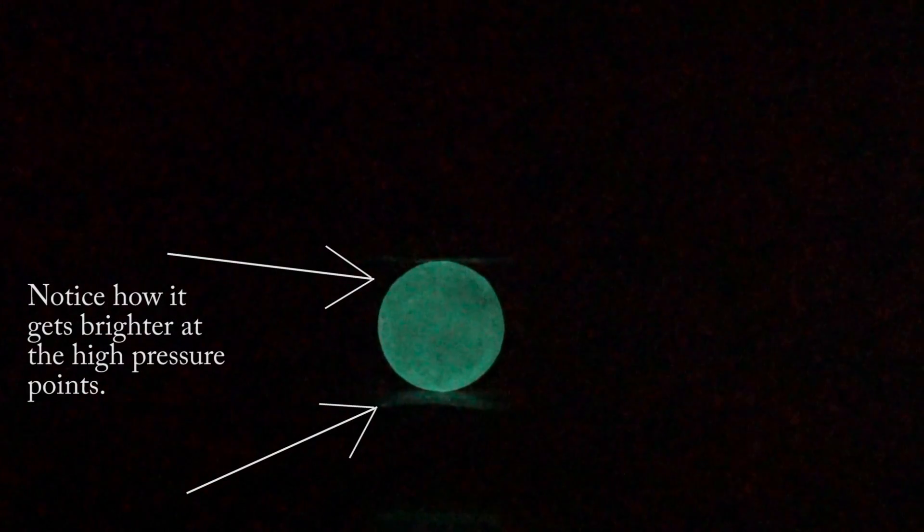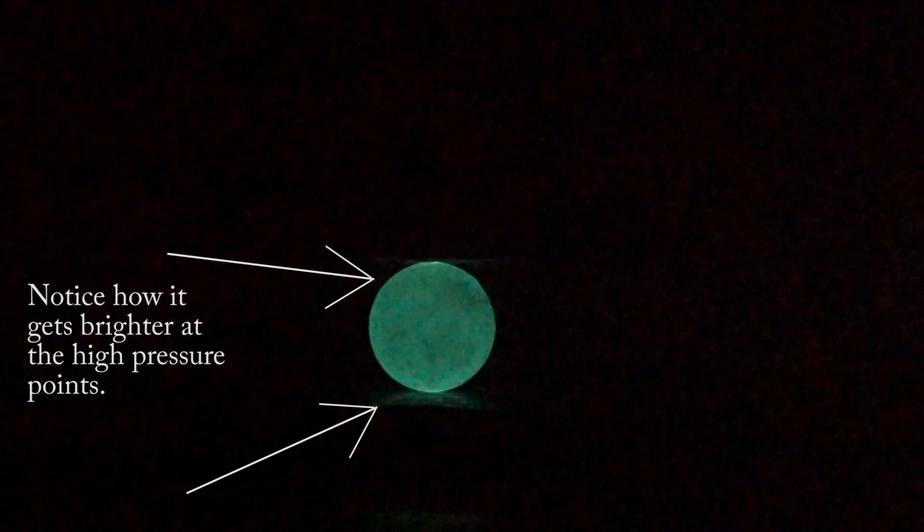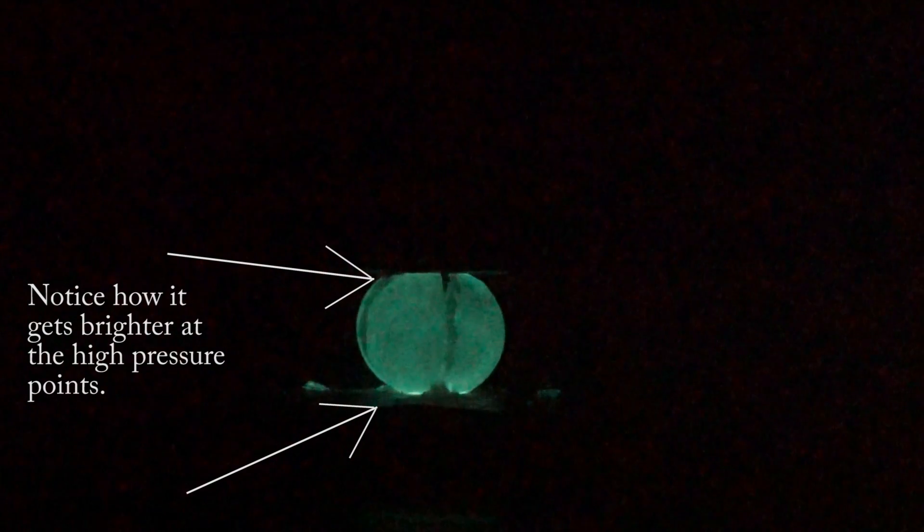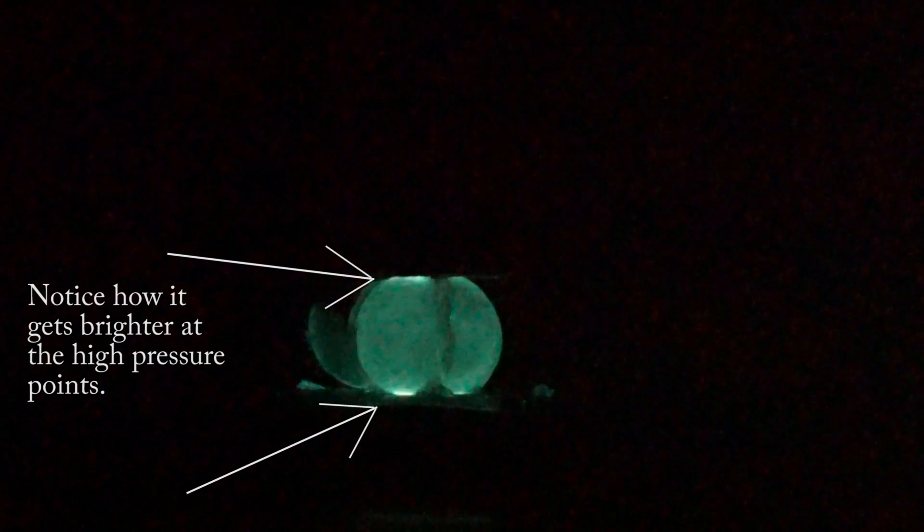So what I'm trying to do here is, in one of my past videos I crushed a glow in the dark rock and as it was crushing it got lighter on the parts that were under the most pressure.